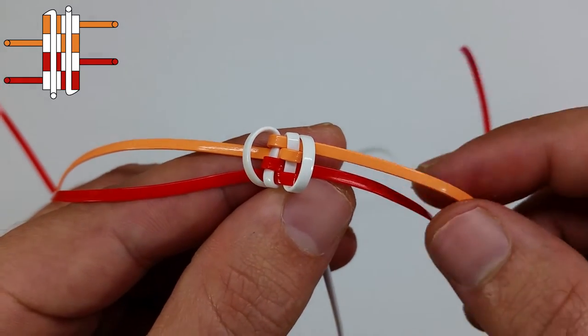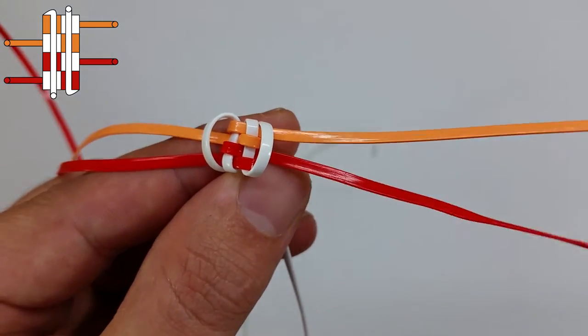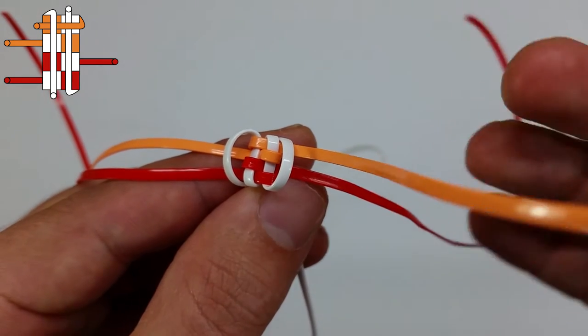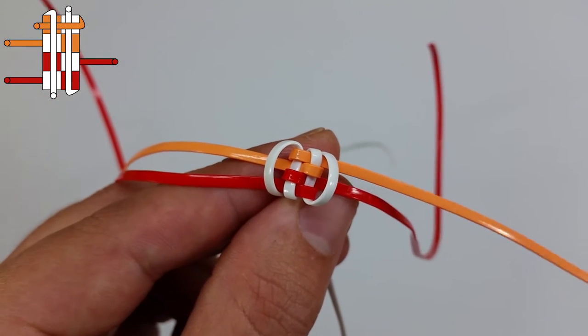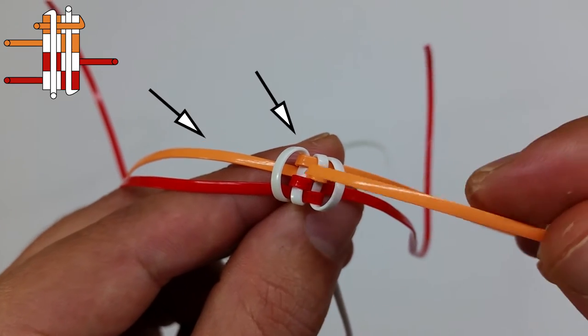We're going to pick the orange string and weave it over-under the two white strings. Make sure it's going to be in between the orange and the white strings.